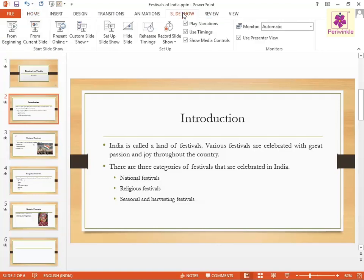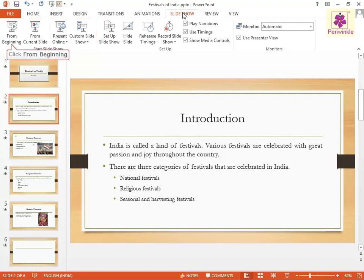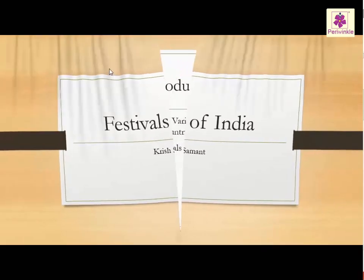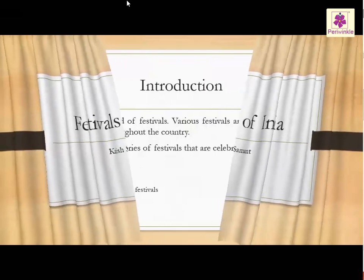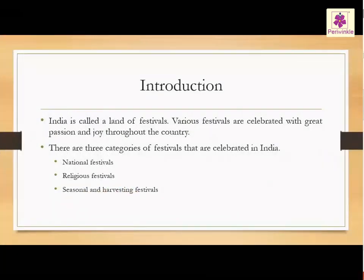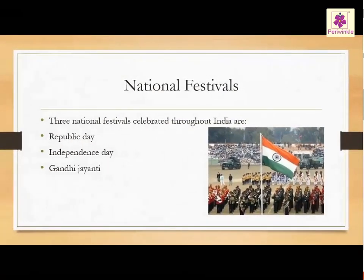To start the slideshow from the first slide, go to the Start Slideshow group and click on the From Beginning icon. The presentation slide appears across the entire computer screen. You can also press the F5 key to start the slideshow from the first slide.